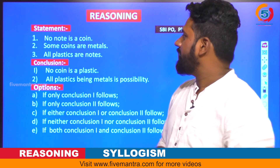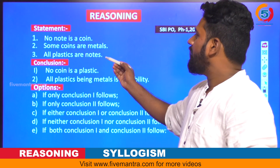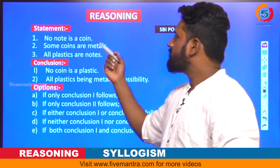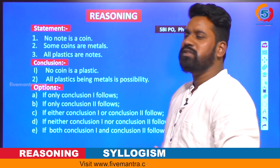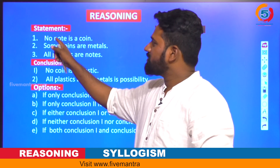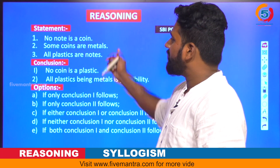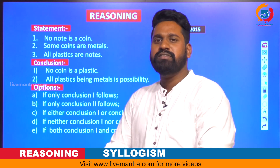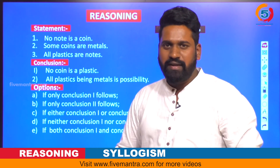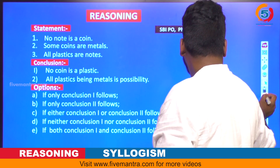The next question also has three statements: no note is a kind, some kinds are metals, and all plastics are notes. This is also from the 2015 exam. The first is a universal negative statement, the second is a particular positive statement, and the third is a universal positive statement.